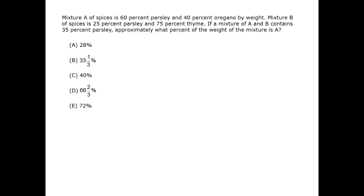In this question, we can write a weighted average for the amount of parsley in the final mixture. In general, where a weighted average is possible, it will be the fastest route to solving a question. We can call x the proportion of mixture A and write the following.